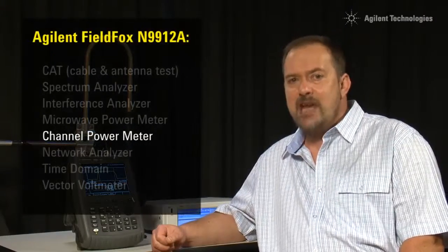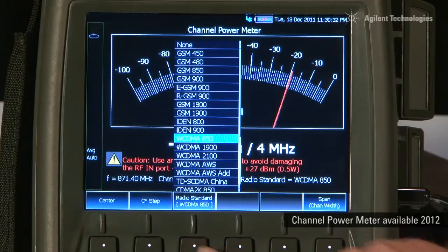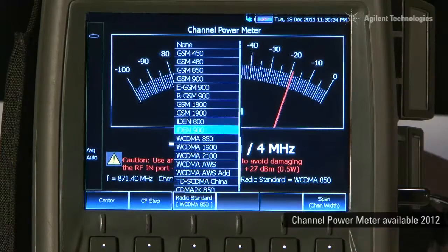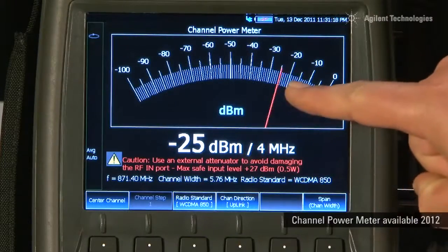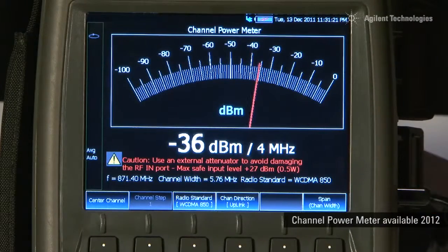And with the new channel power meter option, we can even make channelized RMS power measurements with the same traditional power meter user interface we are all familiar with, but without the need for an external power sensor.